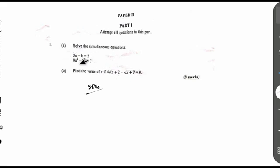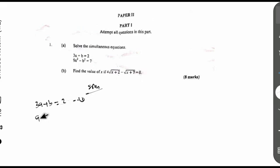Step 1: let's write the equations out. The first equation is 3A plus B equals 2. The second equation is 9A squared minus B squared equals 7.